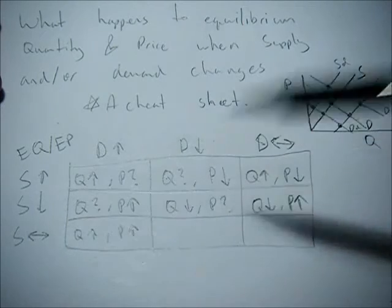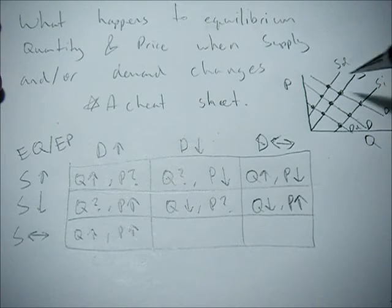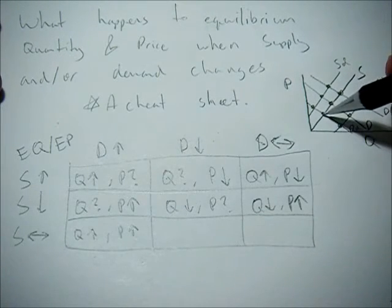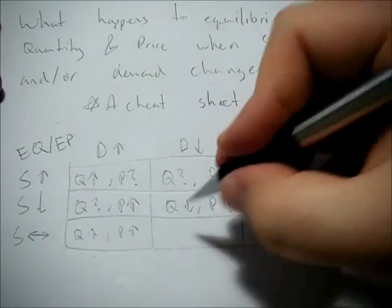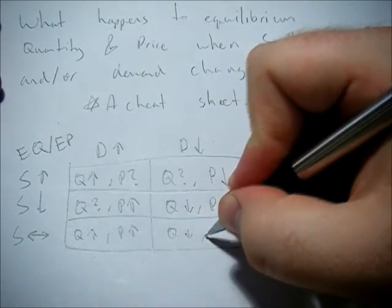If supply stays the same and demand goes down, we end up at a new lower equilibrium point. Both equilibrium price and quantity decline.